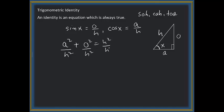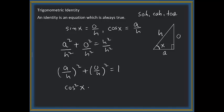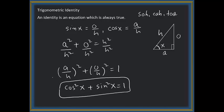Now we divide each term by h². We get (a/h)² + (o/h)² = 1. By definition, a/h is cosine, so this becomes cosine² x, and o/h is sine, giving sine² x. Therefore, cosine² x + sine² x = 1.